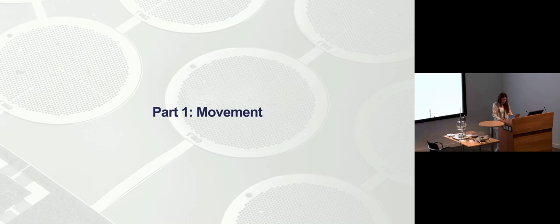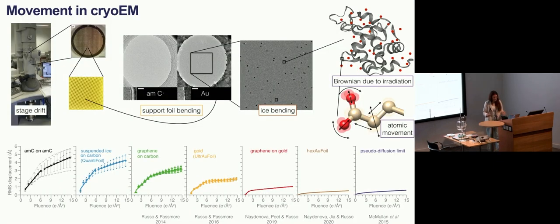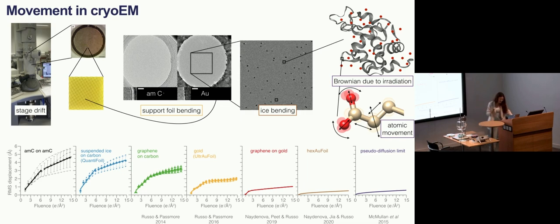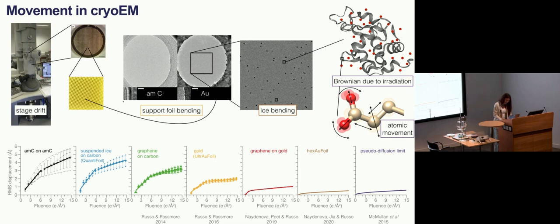The first part of the talk is about the motion of the specimen. There are different types of motion in cryo-EM, all of which cause blurring. The specimen is inserted on the cryo stage, and due to thermal gradients or mechanical vibrations, the whole stage with the specimen could move. On top of that, the specimen — a 3-millimeter grid with a thin foil — can bend during electron irradiation, as shown in these movies where we see the edge of a hole in the foil moving during exposure to the electron beam.